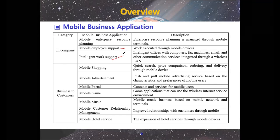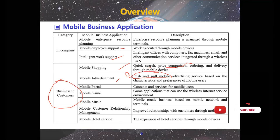Intelligent work support refers to intelligent offices with computers, fax machines, emails, and other communication services integrated through wireless. For business-to-customer, the first application is mobile shopping, used for quick search, price comparison, order, and delivery through mobile devices. The second is mobile advertisement — push and pull mobile advertising service based on the characteristics and performance of mobile users.